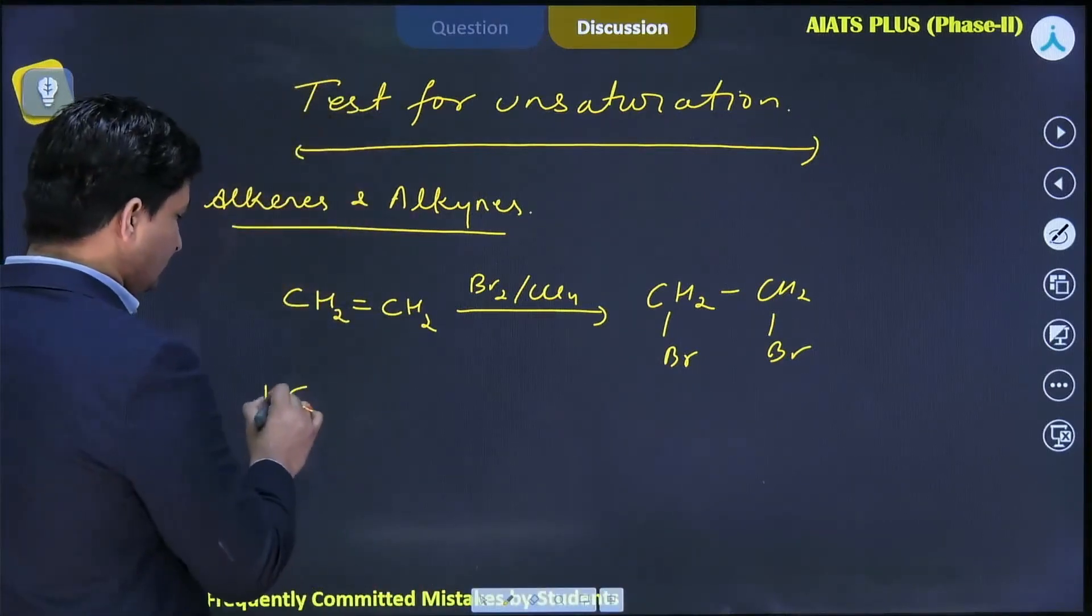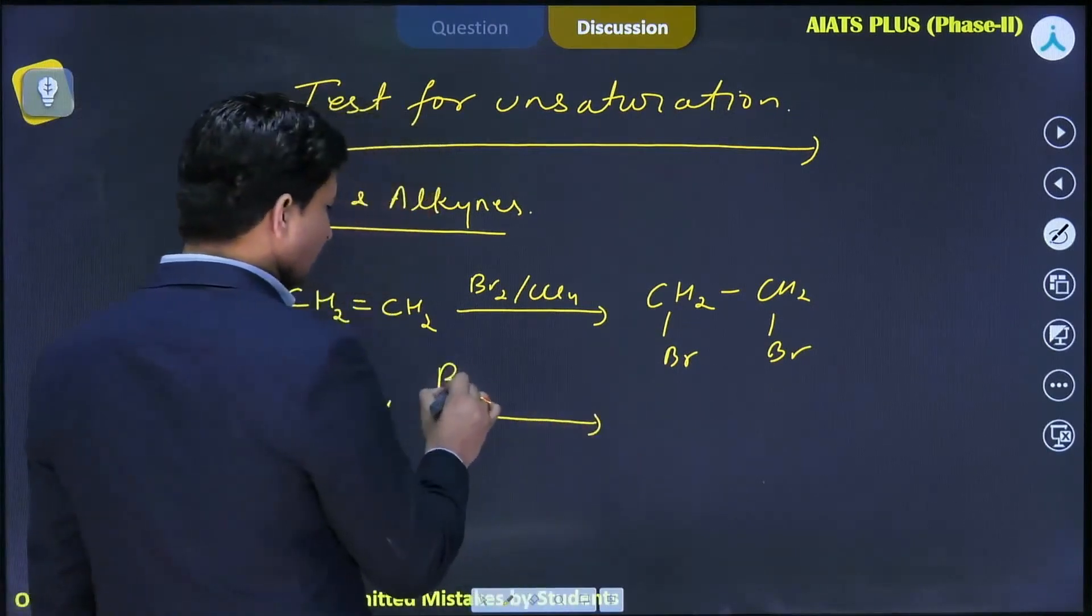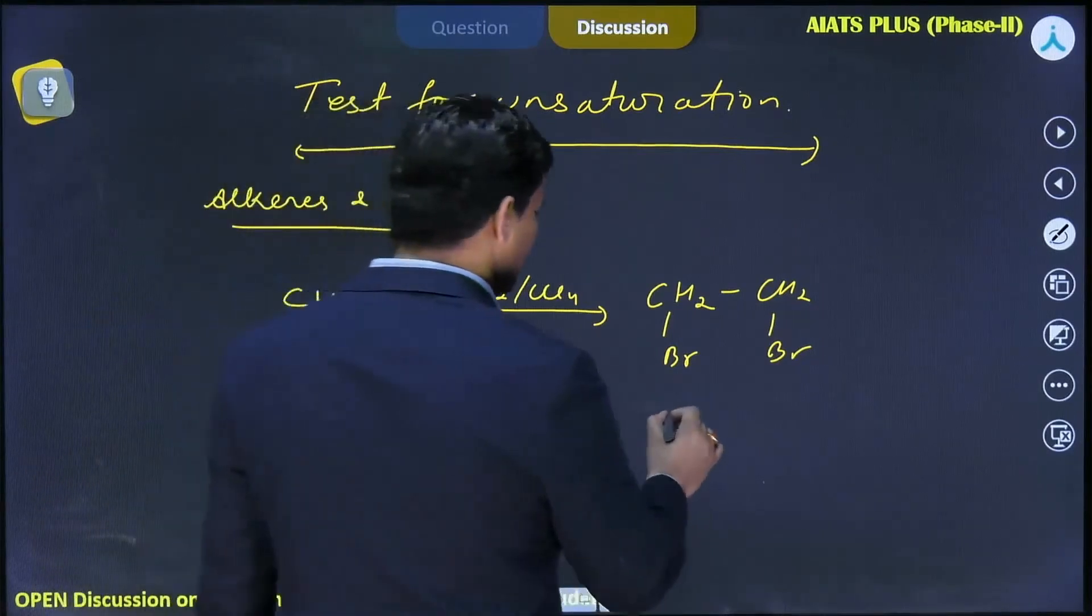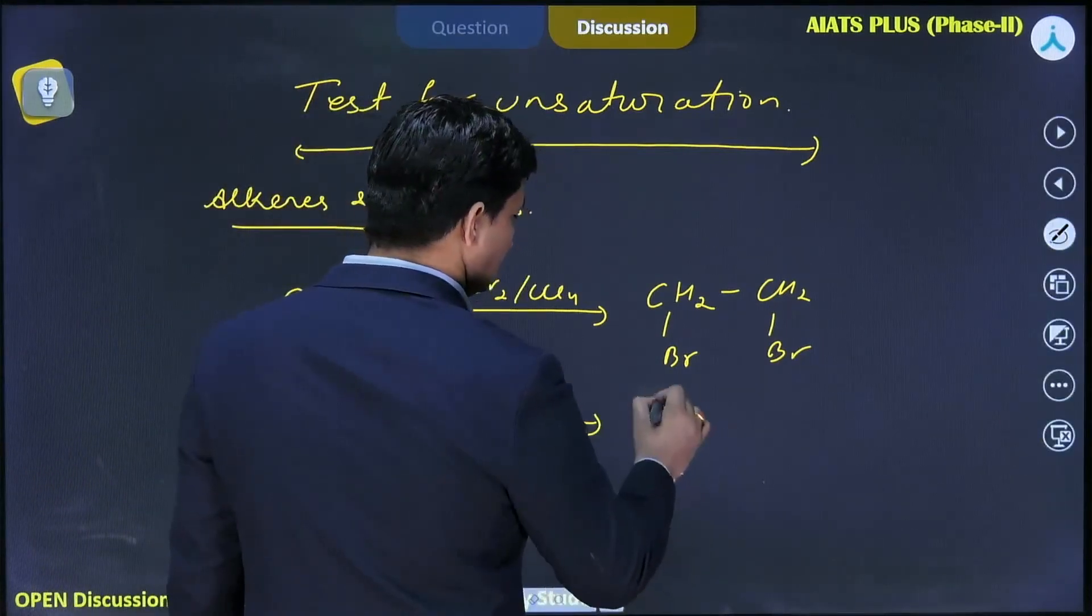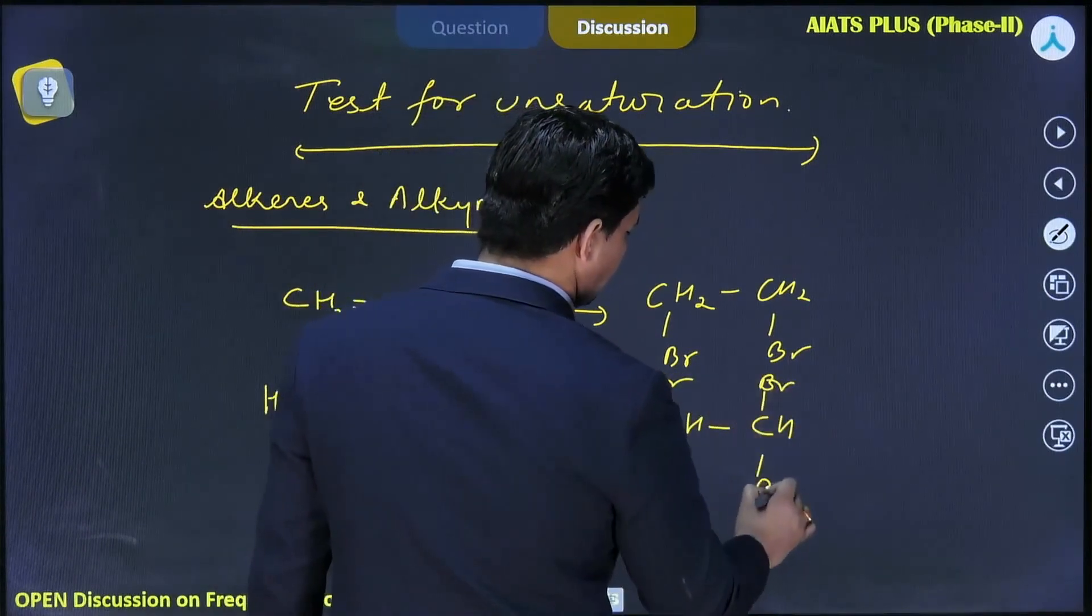Suppose CH triple bond CH. This reacts with Br2 in presence of CCl4. In that case, here CH Br Br, CH Br and Br. So this will be the product formed.